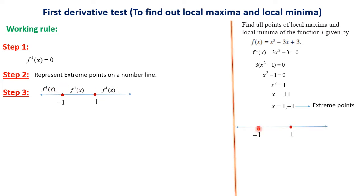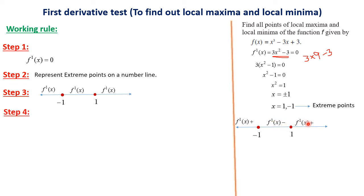So f'(x) is positive before −1, negative between −1 and 1, and positive again after 1. Step 4: Identification. If f'(x) changes from positive to negative at an extreme point, that point is the point of maxima. If f'(x) changes from negative to positive, that extreme point is the point of minima. If f'(x) does not change sign at an extreme point, that point is called the point of inflection.